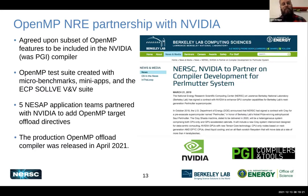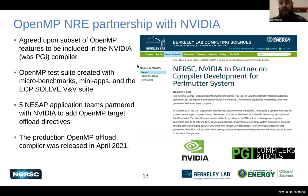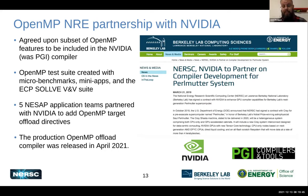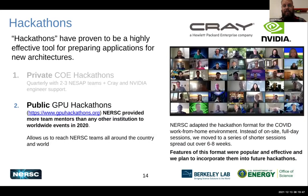We partnered with NVIDIA to make sure that OpenMP offloading was available within what used to be the PGI compiler suite. This is now in production, released back in April 2021, and continues to improve in every release of the NVIDIA HPC compiler since then.